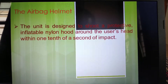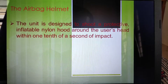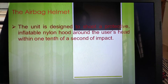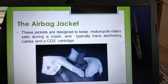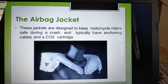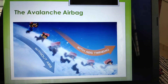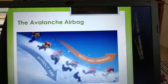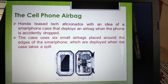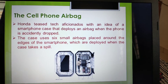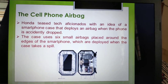Airbag helmet: this unit is designed to deploy a protective inflated nylon hood around the user's head within one tenth of a second on impact. Airbag jacket: designed to keep motorcycle riders safe during a crash, typically having an anchor cable and a CO2 cartridge. There is also the avalanche airbag with and without ABS. Additionally, there is a cell phone airbag: a smartphone case concept that deploys six small airbags around the edges of the smartphone when it detects the phone is being accidentally dropped.